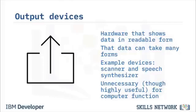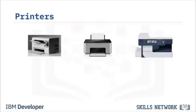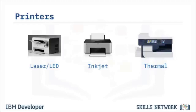A printer puts text or pictures onto paper. There are four main types: laser, LED, inkjet, and thermal. Laser or thermal printers use a heated unit to fuse ink onto paper. LED printers have a photoreceptive drum charged with static electricity; paper passes between heated rollers, fusing the toner before it exits. Inkjet printers have a print head with tiny holes that put microscopic ink droplets onto paper very quickly. Thermal printers heat specially coated paper and are used in point-of-sale terminals and fax machines.